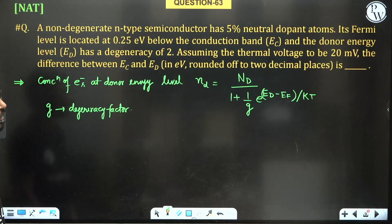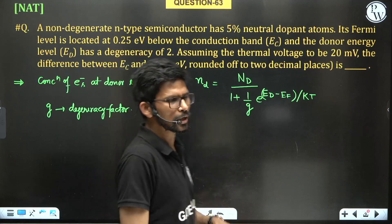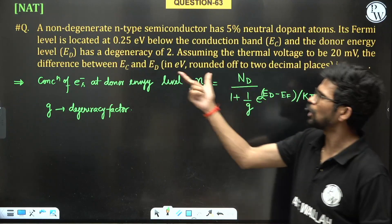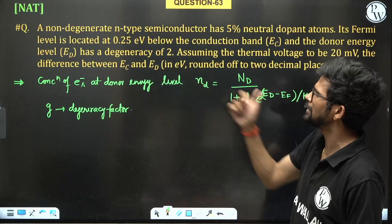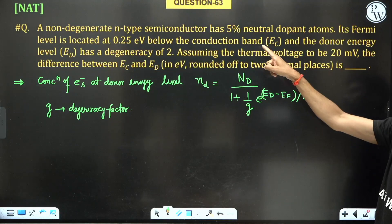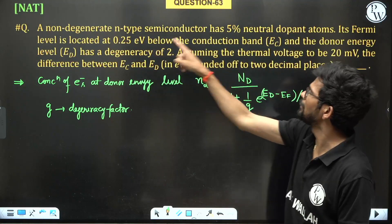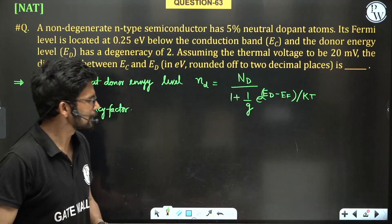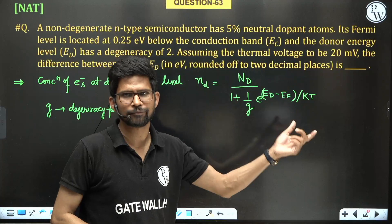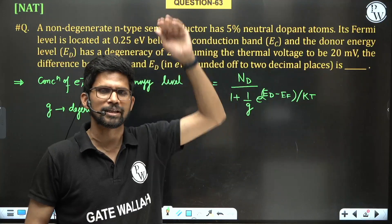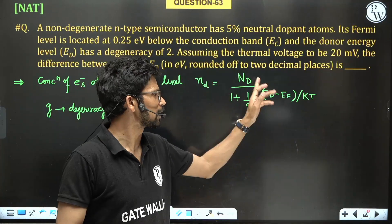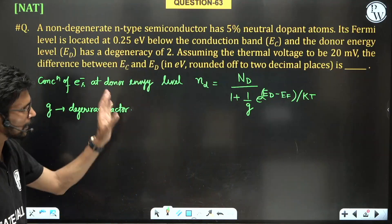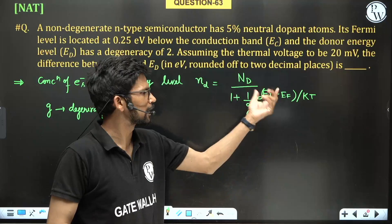From this formula we can find out the value of ED minus EF. But we need to find EC minus ED. The Fermi level position is given with respect to EC, so we know EC minus EF. If we can find ED minus EF, we can easily find EC minus ED.